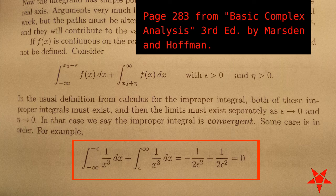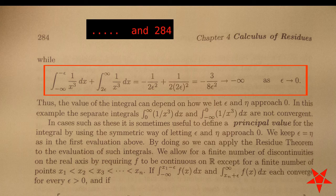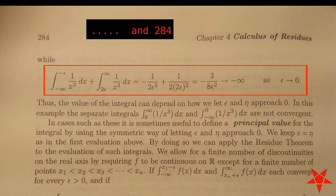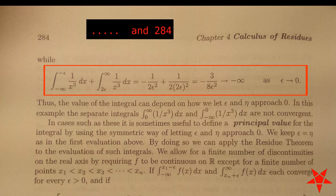For example, the improper integral 1 over x cubed from minus to positive infinity, shown on page 283, does not converge. But if we choose to evaluate the limit at x equals 0 in a symmetric fashion, then it does. But as we see on page 284, if you evaluate the limit in an asymmetric fashion, then the integral remains undefined.